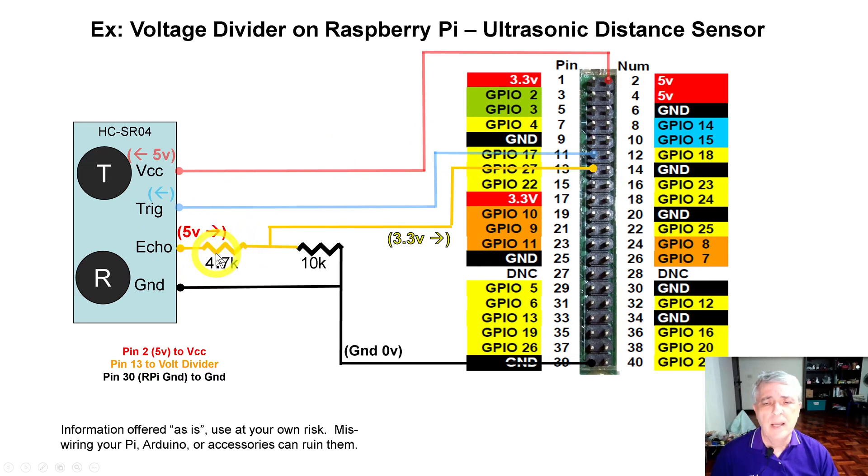Through a little bit of electronic magic, I can use this 4.7K ohm resistor and a 10K ohm resistor in this configuration. When I take a tap off in between those, I get my 3.3 volts, and of course this end is grounded. This little resistor configuration will give me my 3.3 volts.